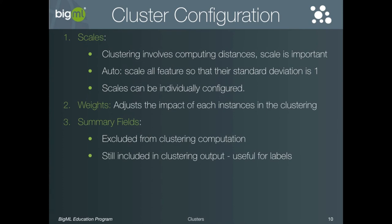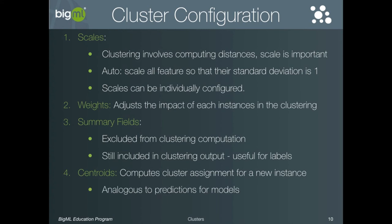Finally, we have the resource type called centroids. Once a clustering has been computed, a new instance can be scored to see which cluster group — that is, which centroid — it belongs to. This is analogous to making predictions for a new instance with a model. Similar to predictions, it can also be done in batch. This allows the cluster assignment to be computed for an entire dataset of instances, and can output the results either in a new dataset or a CSV available for downloading.